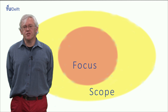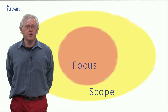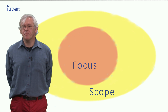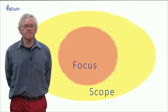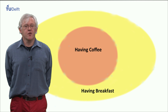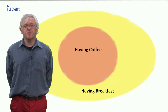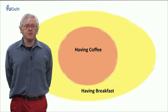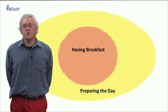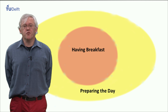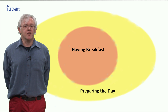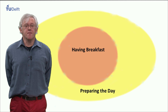It helps to choose two boundaries. The focus — what you are designing for — and the scope, a bigger picture that is connected to that. For instance, if you focus on designing something that should improve the experience of having coffee at home, the scope could be having breakfast. Or if that is too narrow, the focus could be having breakfast and the context preparing for the day.